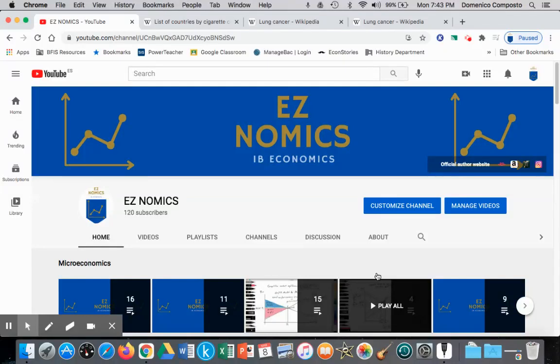Hello, this is Domenico with EZNomics, and we're going to look at another form of market failure, negative externalities of consumption. So we're not looking at the production side, we're looking at the household creating some type of negative spillover effect.